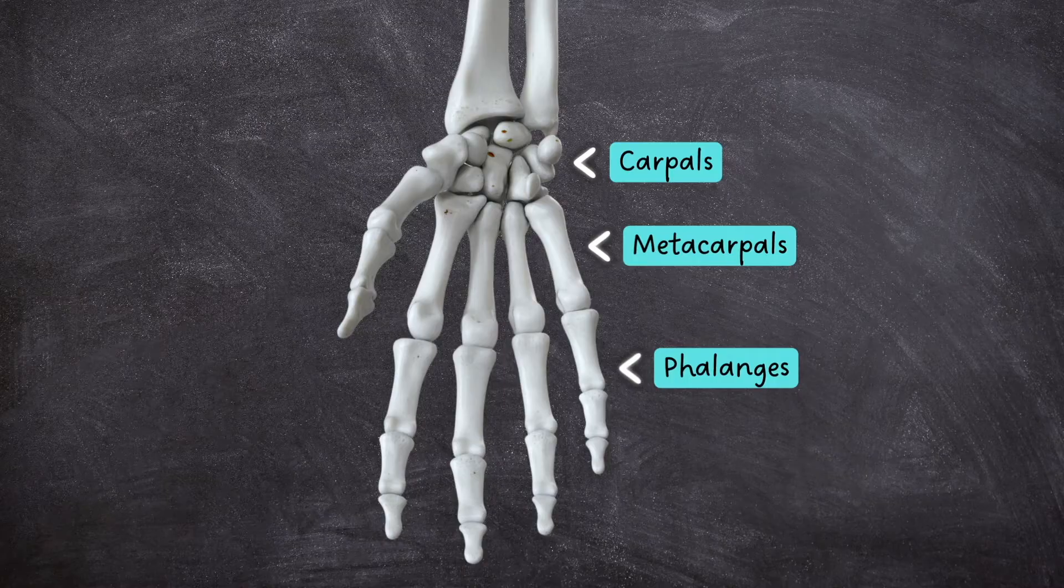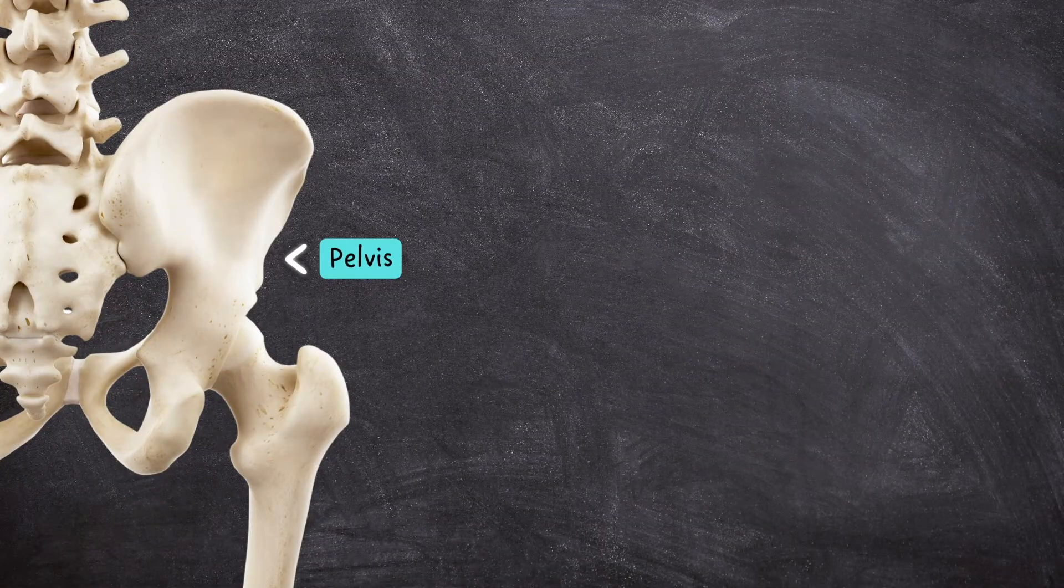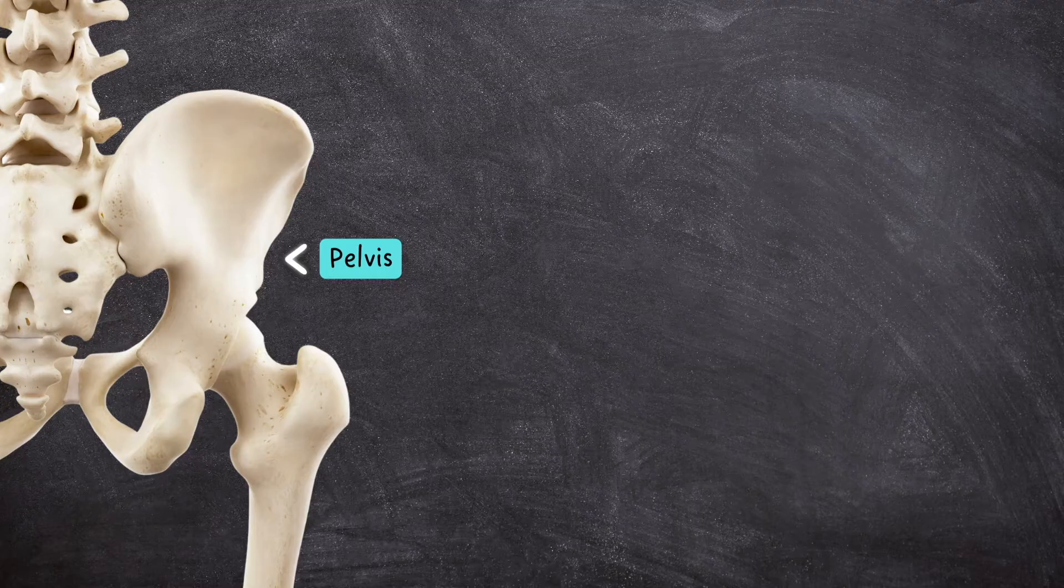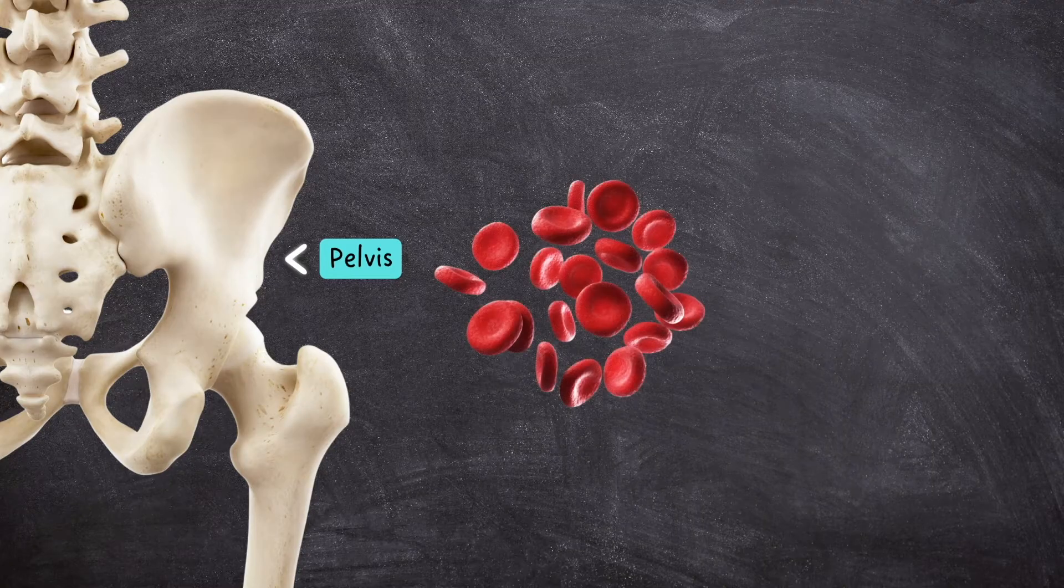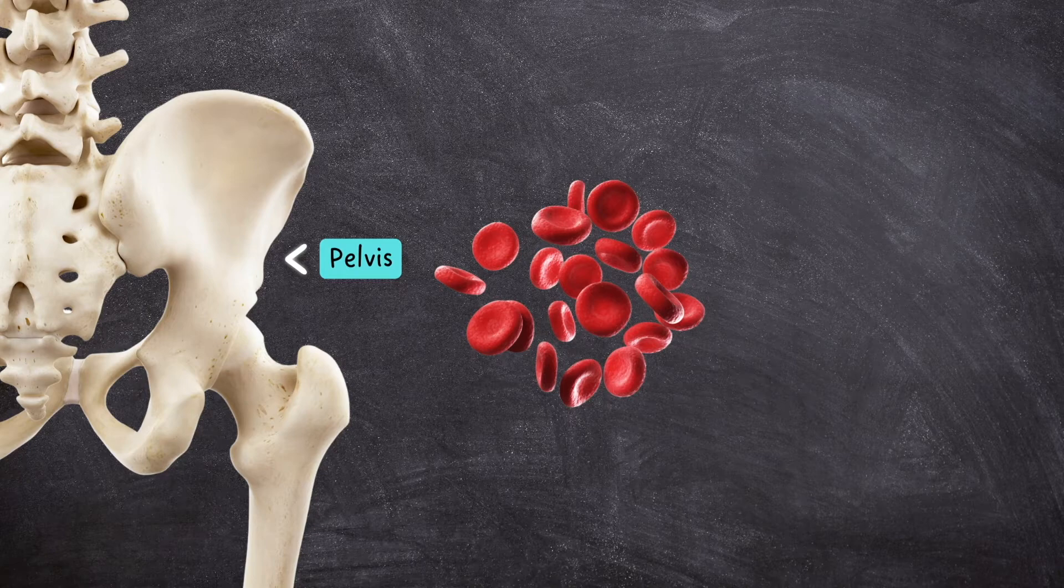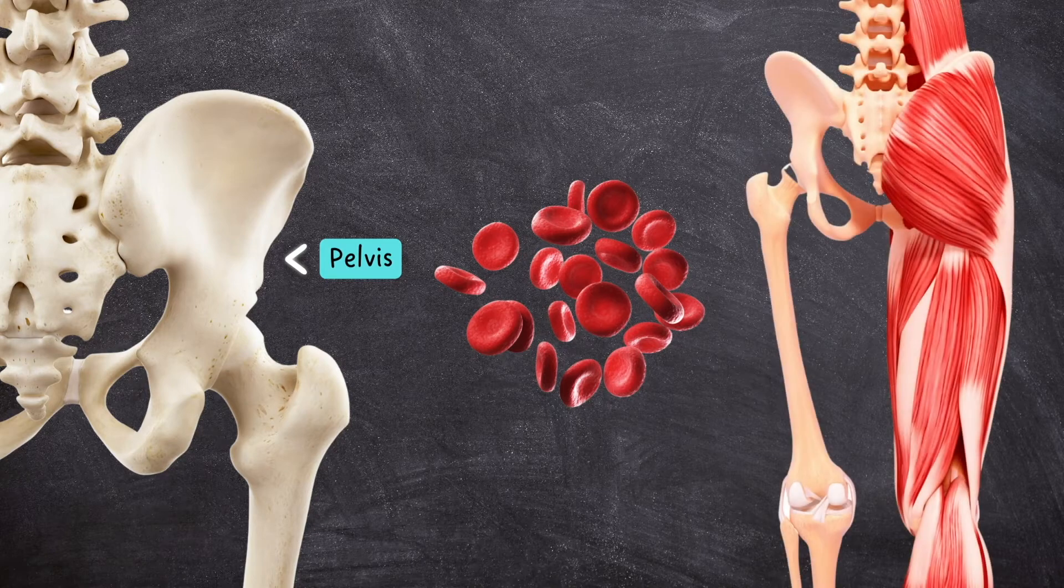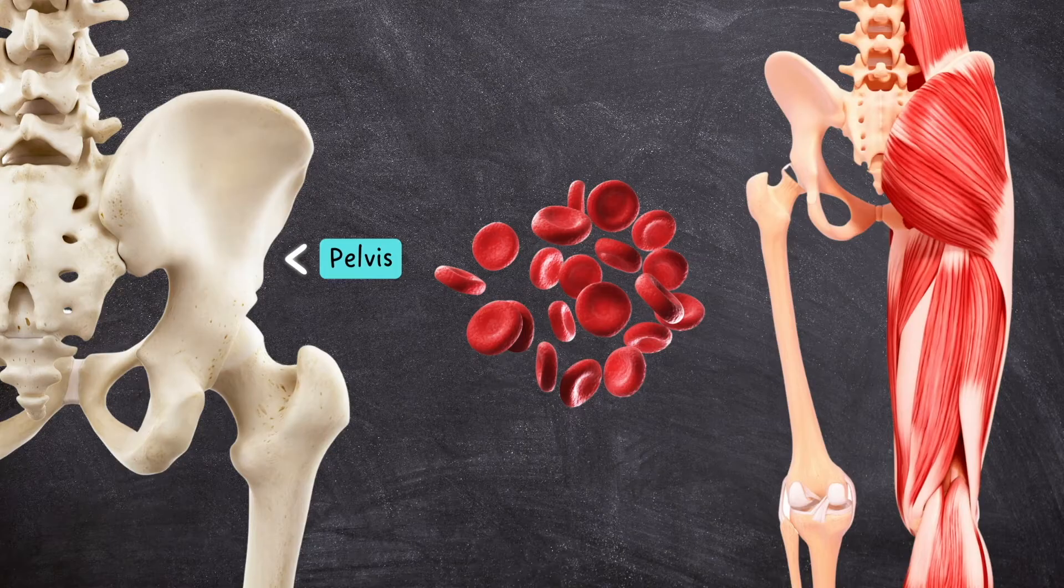The pelvis is a broad, irregularly shaped flat bone that has roles in supporting the weight of the upper body, producing red blood cells due to its high red bone marrow content, and providing the surface area necessary for muscle attachments.